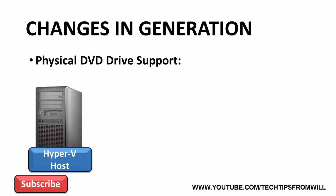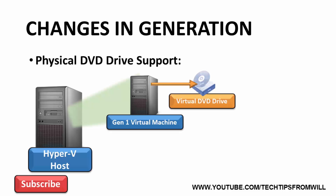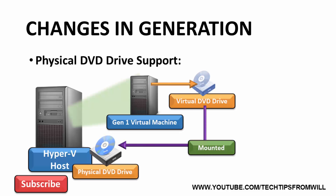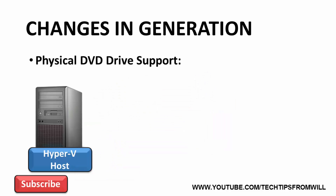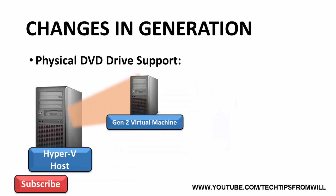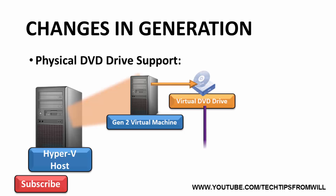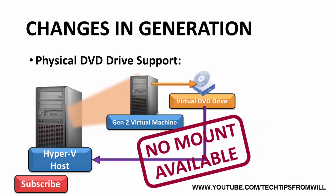The next change concerns physical DVD drive support. In Generation 1 virtual machines, it was possible to attach a virtual DVD drive to the virtual machine and mount it to a physical DVD drive on the Hyper-V server. This allowed you to insert a DVD disk into the Hyper-V server and access it from the virtual machine, which was particularly useful for installing an operating system. With Generation 2 virtual machines, this is no longer possible — the ability to mount a virtual DVD drive to a physical DVD drive has been dropped completely.